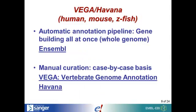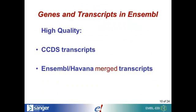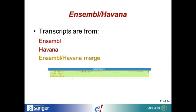In Ensembl you'll also see Vega-Havana annotation. This is manual curation where a team looks at each gene on a case-by-case basis, deciding what the splice variants are for each gene. Havana is a group at the Sanger Institute that does this. We can import their transcripts and compare them to our automatic annotation pipeline, which builds genes by taking sequences from Uniprot, NCBI RefSeq, and aligning them to the genome. If you want the highest quality transcripts in Ensembl, look for the CCDS for coding sequences, and also for the Ensembl-Havana merged transcripts — our golden transcripts for human, mouse, and zebrafish. A golden transcript means both the Ensembl annotation pipeline and Havana manual curation agree.